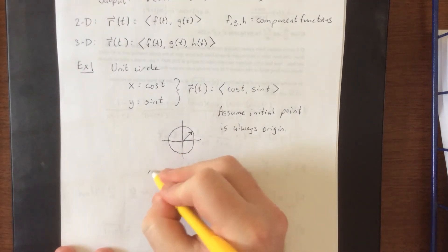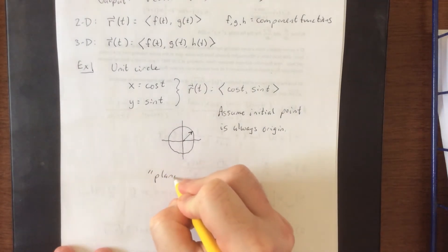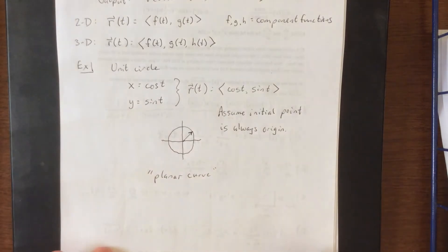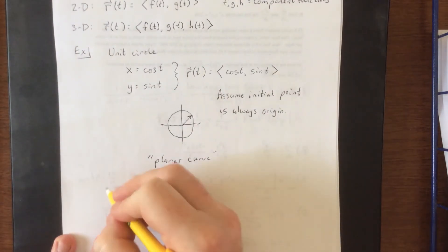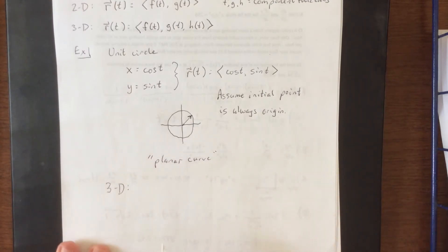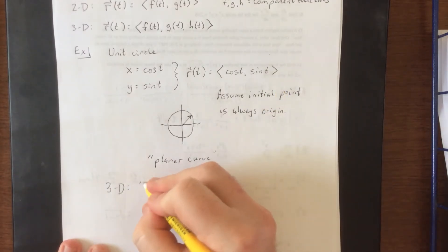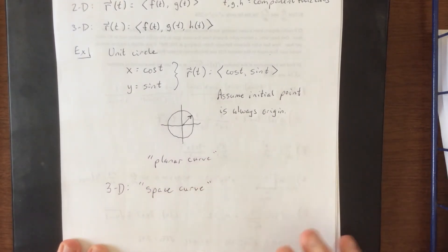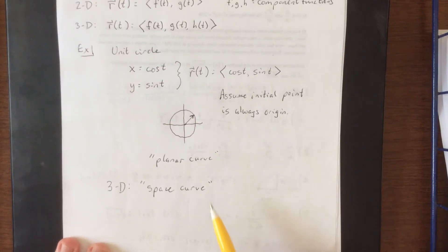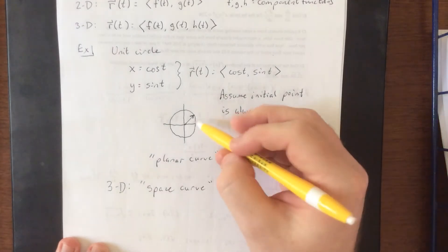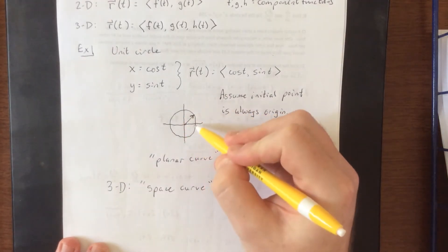Now for two dimensions, this creates what's known as a planar curve. If we were to do this in three dimensions, the set of all terminal points of a vector-valued function would be referred to as a space curve. More generally, a curve defines something that is one-dimensional, that exists within a higher number of dimensions.